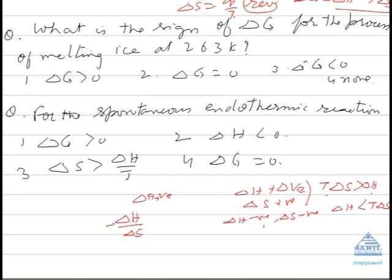So delta H upon delta S will give you the temperature at which the process will be at equilibrium. Above this it will move in the forward direction, below this it will move in the backward direction.